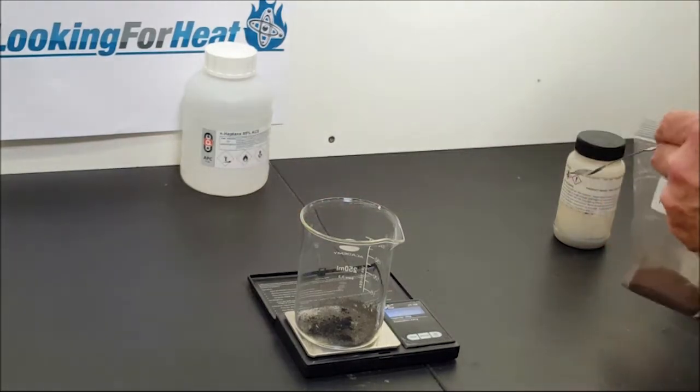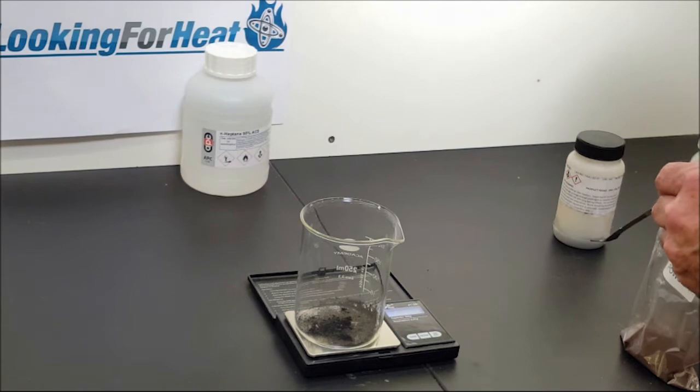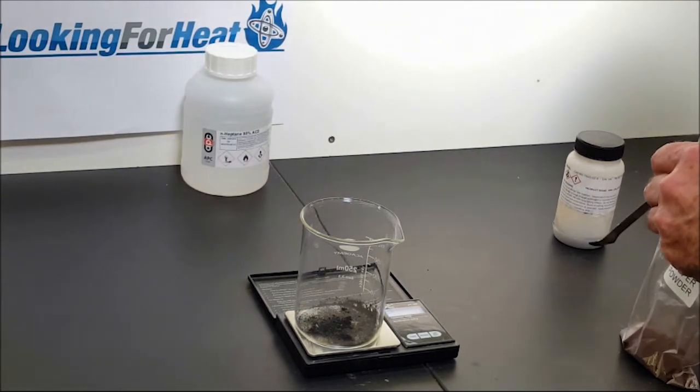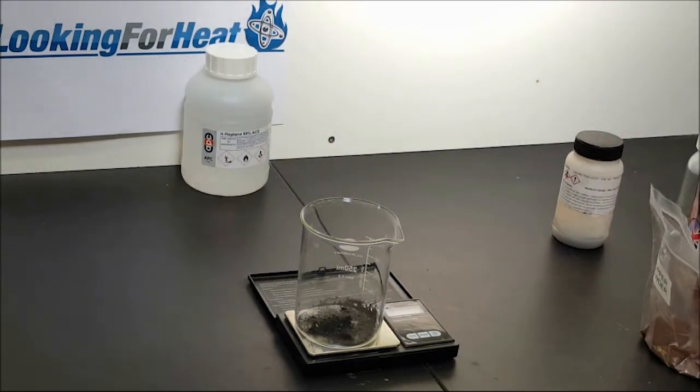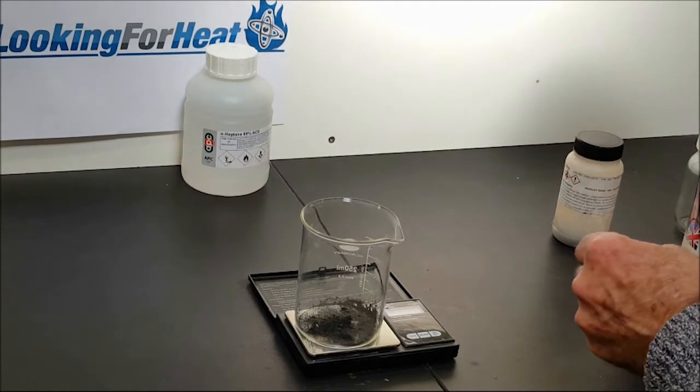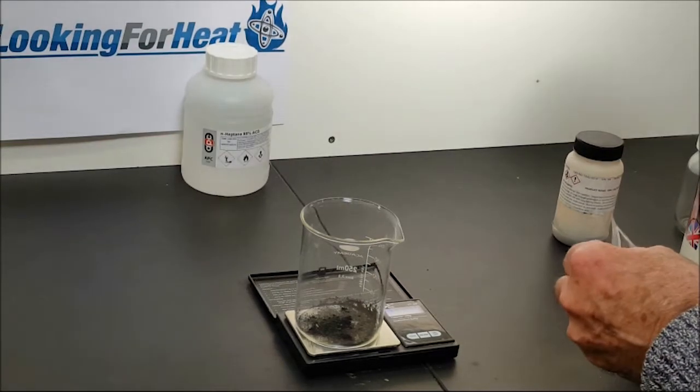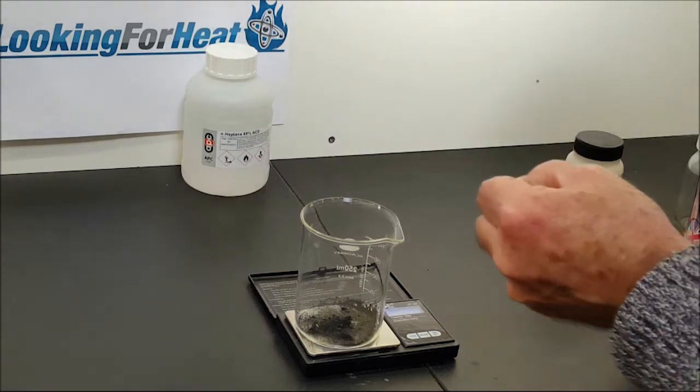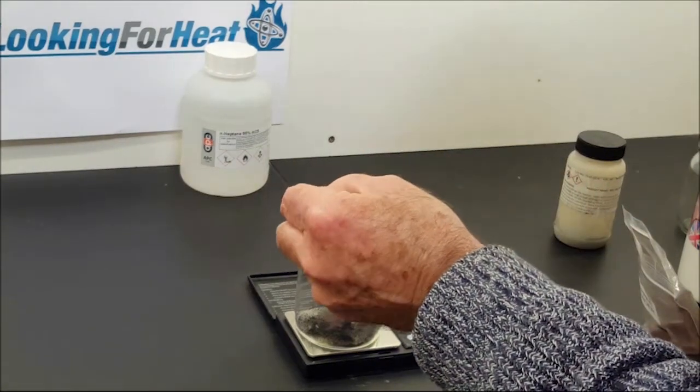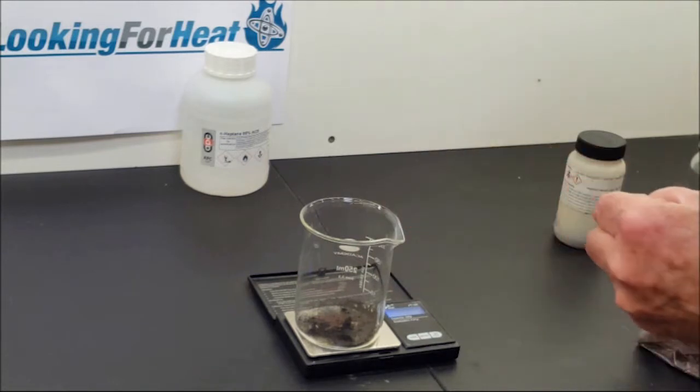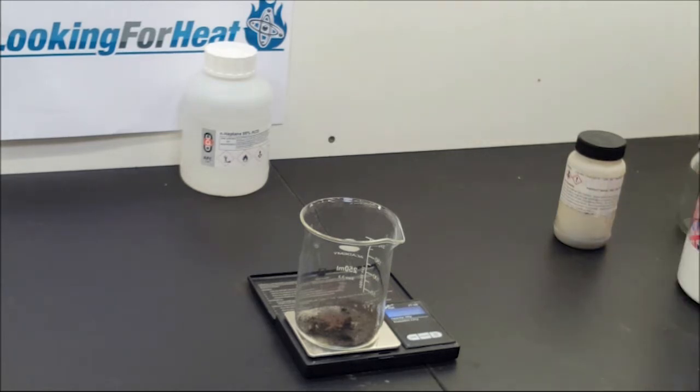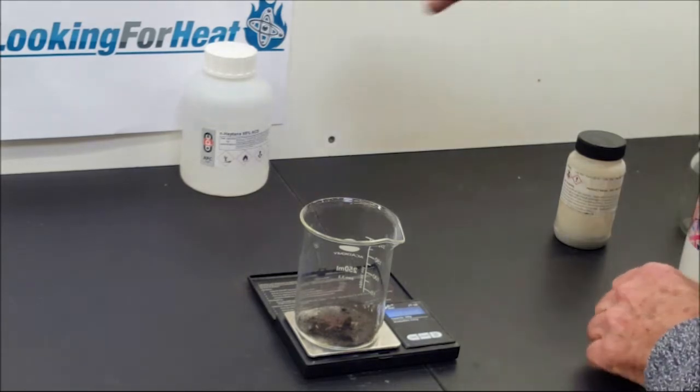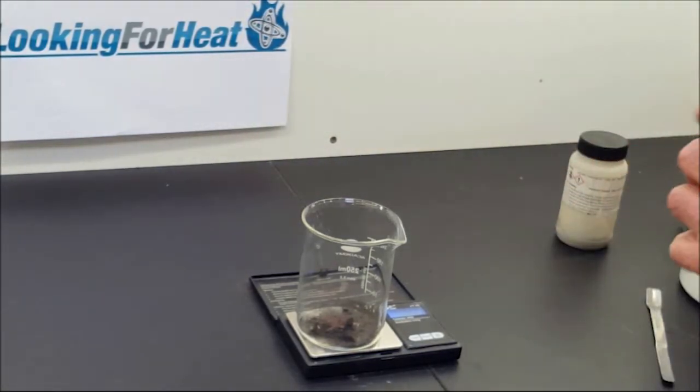The next step, another 0.1 of a gram, this time of copper powder. Copper is used as a spillover catalyst. Some of you may remember that certain Italian gentlemen made excuses for having copper, which involved talking about nickel 62, which may or may not be significant. That's 0.1 of a gram of copper.